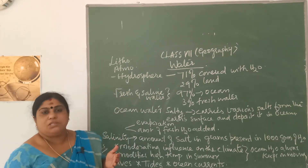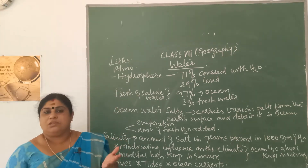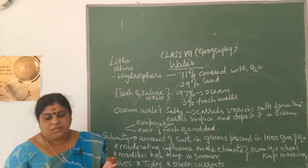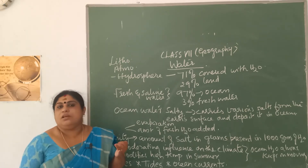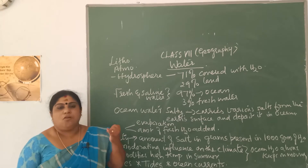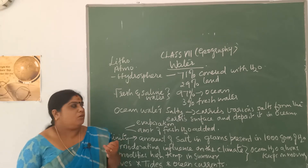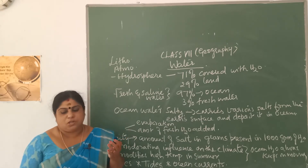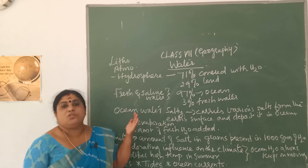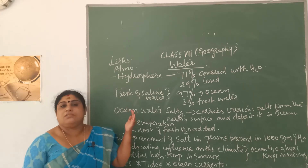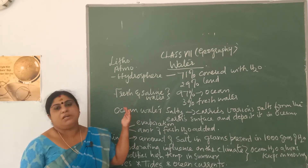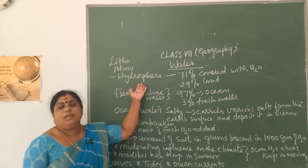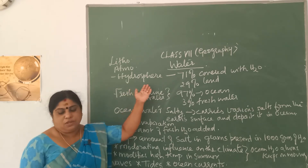Which are the water bodies that you see on the earth's surface? It includes oceans, seas, lakes, and rivers. All these are water bodies, and even snow and ice also come under these water bodies, which you call in one term as hydrosphere.